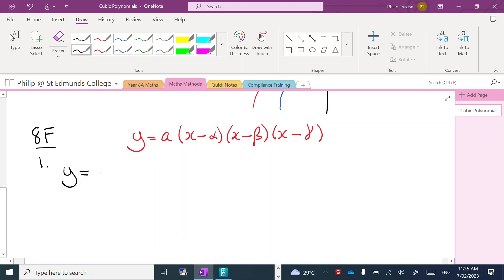So let's try the first one. We have the question y = x(x - 1)(x - 3). Now that first one with just x, I'm going to imagine as x - 0.